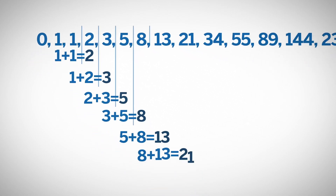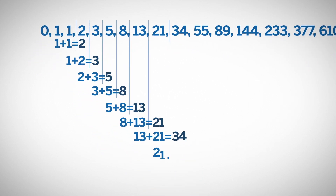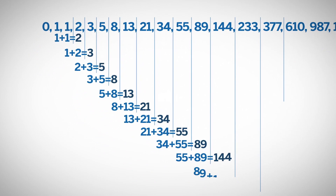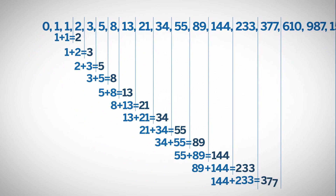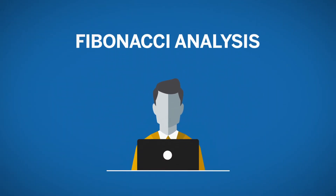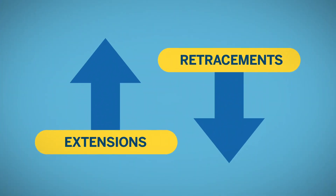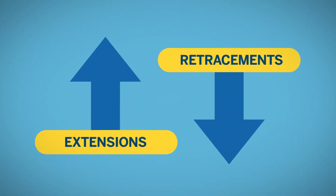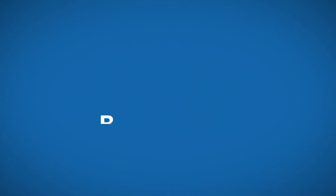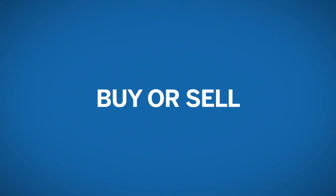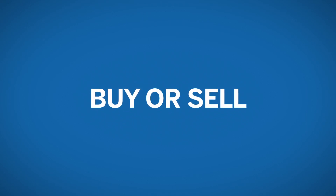What is important for traders about this sequence of numbers is the ratio between each of the numbers. Traders use Fibonacci analysis to predict how far a trading instrument will move. The analysis is applied to look for price extensions or price retracements. A trader will use these projections of price to decide whether it is a good time to buy or sell based on the Fibonacci levels.